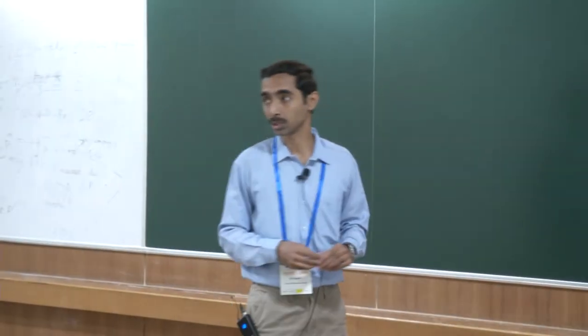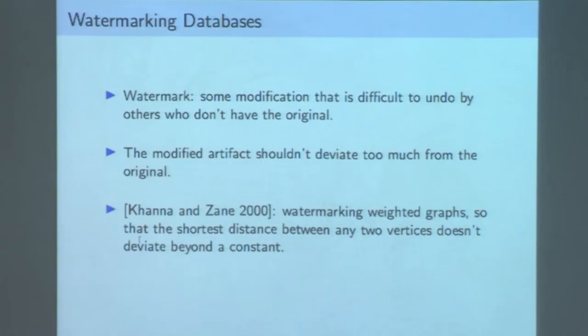How do you measure how much is too much? That depends on what kind of digital object you want to watermark. Consider this work where they studied how to watermark weighted graphs. The motivation comes from the need to watermark maps showing how to get from one place to another. The underlying model is weighted graphs with weights on edges. They studied how to slightly modify these weighted graphs such that for any two vertices, the shortest distance between them does not differ too much between the original and the watermarked copy — the difference should be within a constant.